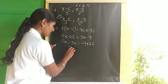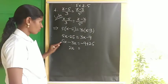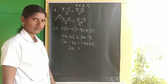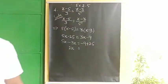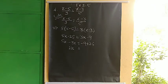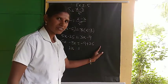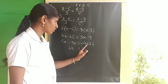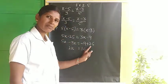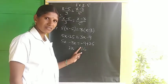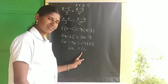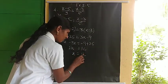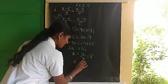5x minus 3x gives 2x. Then minus 9 plus 25: we subtract from the big number and take the big number's sign. 25 minus 9 equals 16, so big number sign is plus. Therefore 2x equals 16, and x equals 16 divided by 2, which equals 8. The x value is 8.